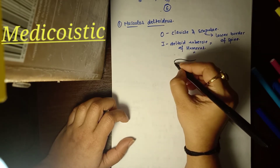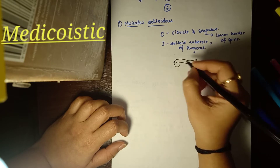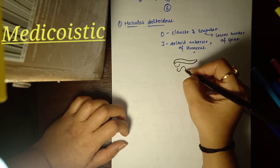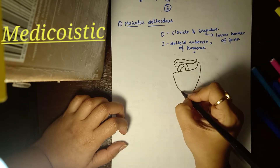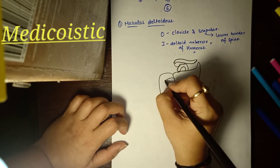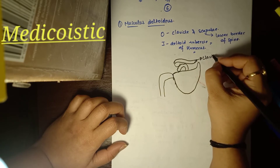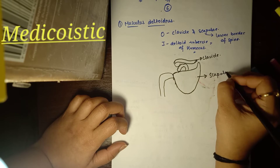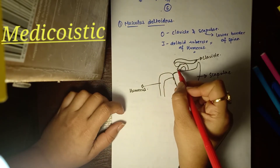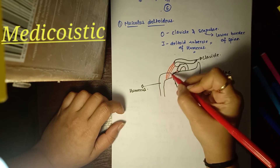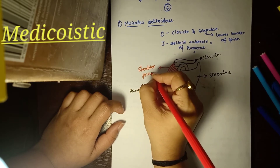Here we have the clavicle, and from here we have the acromion process. This is the scapula, and from here we have the humerus and the glenoid process. So this is the clavicle, this is the scapula, and this is the humerus. The deltoid muscle is found like this - it actually covers the whole shoulder joint.